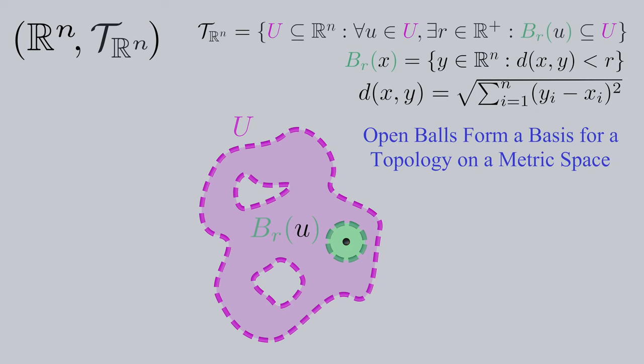The open balls of a metric space will always form a basis for a topology on a metric space. This is why the open Euclidean balls form a basis for the standard topology on Rn. Some people may say that the balls give rise to a topology or that they induce a topology. This all means the same thing.